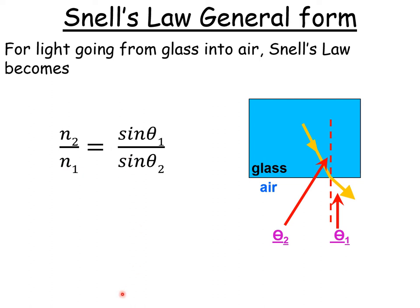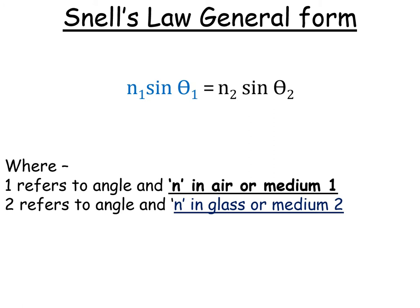Now, how do we get that simple form where it was just n2 equals sine theta 1 over sine theta 2? Well, remember that the refractive index of air is actually just equal to 1. So if you put 1 underneath that, anything divided by 1 is just itself. So that's how you get n2 or n equals sine theta 1 over sine theta 2. So the more usual way we write Snell's Law is like this.